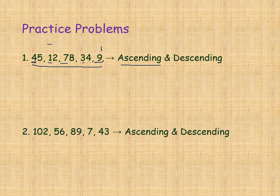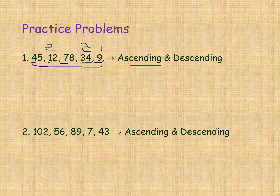Next, from 45, 78, and 34, comparing tens digits: 4, 7, 3 — smallest is 3, so 34 comes next. Then between 45 and 78 — smallest tens digit is 4, so 45 comes next. And the last one is 78. This is the ascending order.